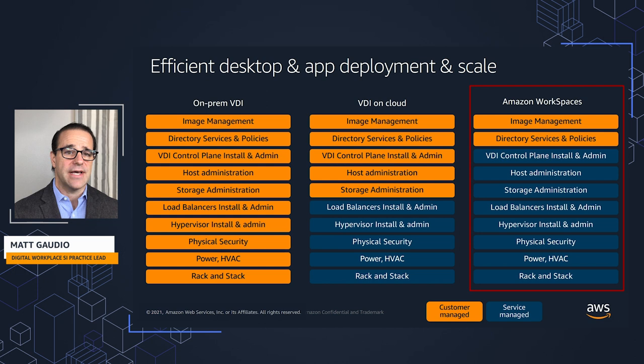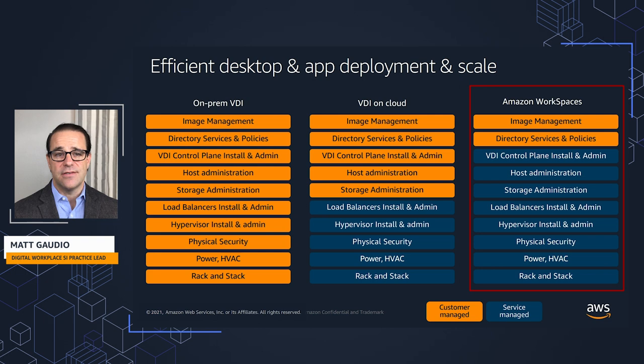If I move to virtual desktop infrastructure on AWS, I can completely remove the hardware piece. When I need to go from 1,000 to 2,000 users, I don't need to procure new hardware or address peak demand. I simply can ask for more, consume what I use, pay for what I use, and then roll it back when that season's over. So I'm not responsible for procuring hardware to meet peak demand.